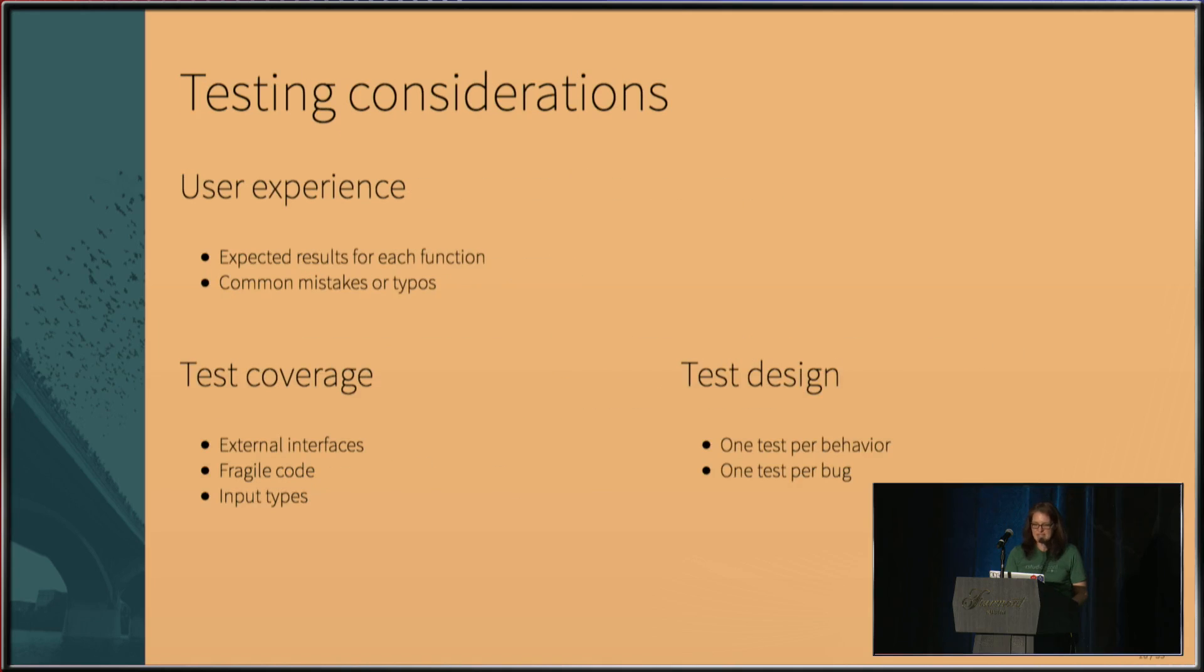So, as you're designing these tests, you're going to want to put yourself into the shoes of the user, the consumer of each function. What would you expect to happen? What are some common mistakes or typos that you might anticipate that a user will put in there for you? You're going to want to focus on your external interfaces, your code, your input types, and integration points, since those are the areas that tend to be most fragile. Write one test for each behavior, so that you always know where to find the test for a given behavior. And when you discover bugs, write tests for those as well, so you're notified if they crop up again later.